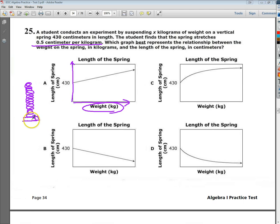This would be length here on my y-axis. So hopefully, as my weight increases, I would imagine that would make the spring become longer. So I'm going to start out at 430, and they all do that. That's good. All at 430 centimeters.